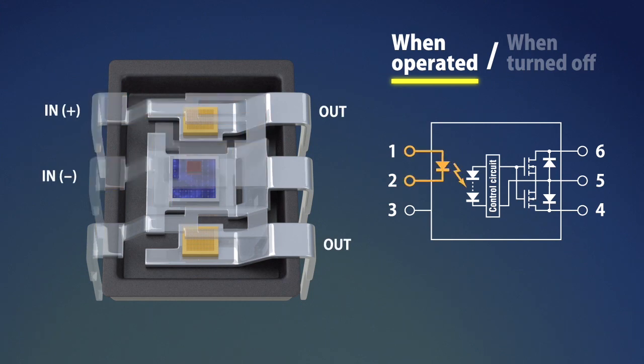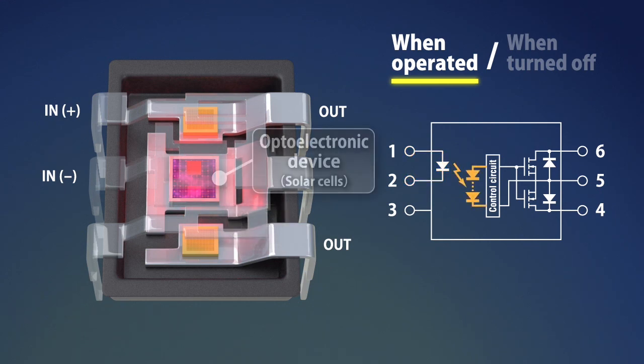During operation, when current flows to the input terminal, the LED on the input side emits light. The emitted light passes through transparent silicon and reaches the photoelectric element, which is mounted opposite to the LED.